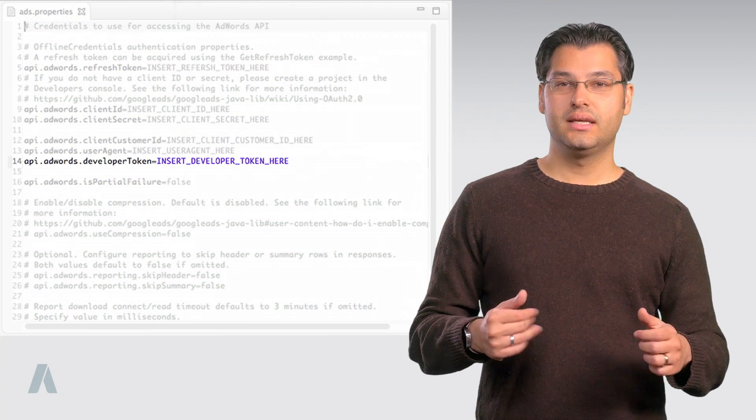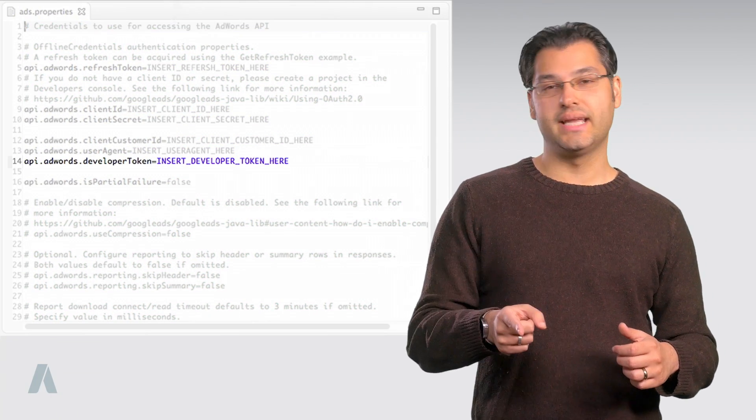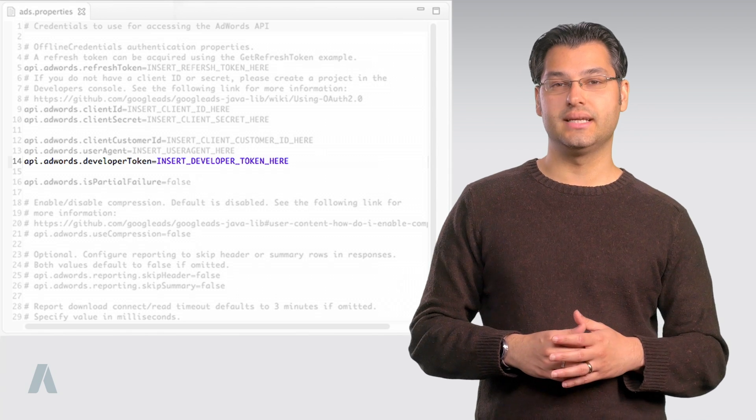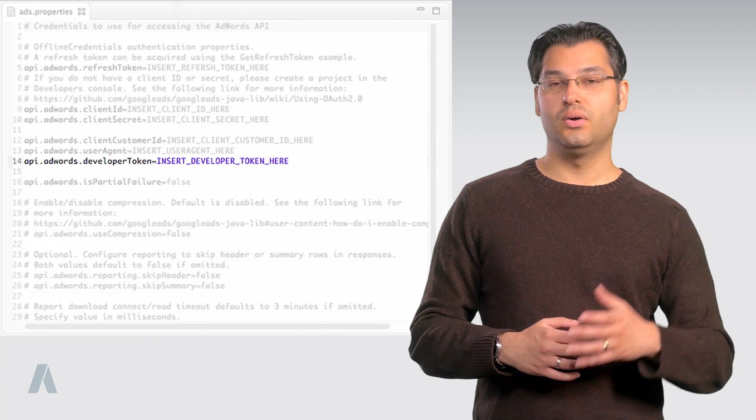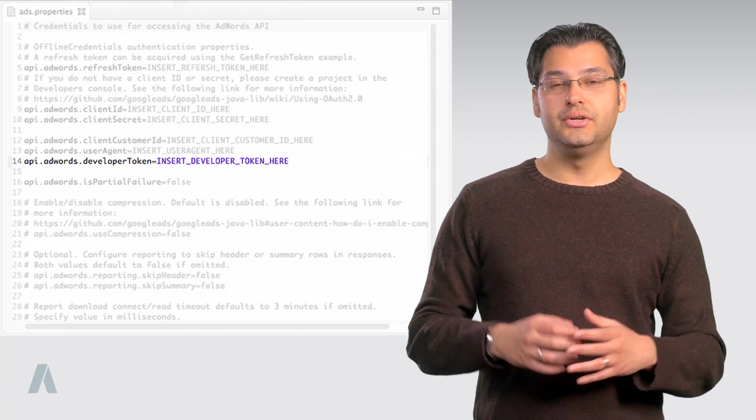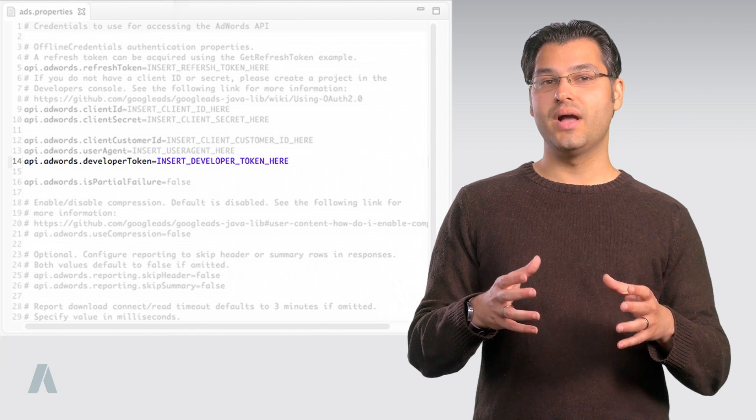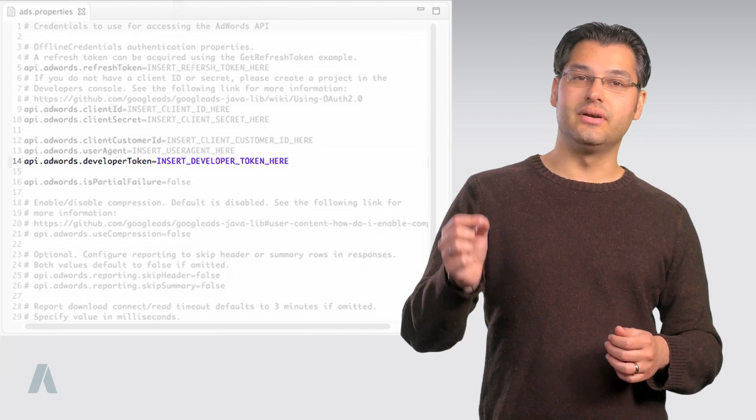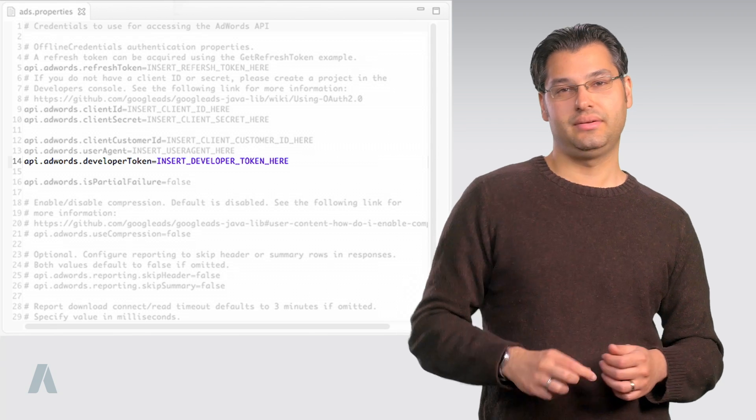Now, let's see. Developer token. This identifies your application to the AdWords API. Only approved tokens can connect to the API for real AdWords accounts. Pending tokens can connect to test AdWords accounts. Once your token is approved, you can use the same token for requests against all your AdWords accounts, including those that are not linked to the developer token's MCC account.